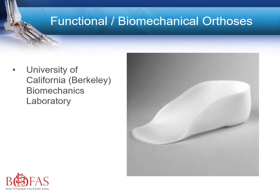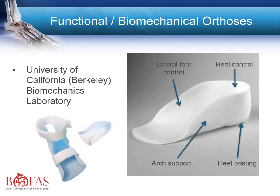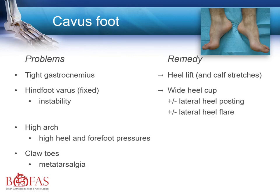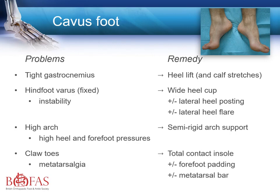Even further support can be achieved by adding a brace to extend this into working as an AFO. Another common and difficult situation is the cavus foot, in which there may be a tight gastrocnemius, hind foot varus, increased foot pressures due to the high arch, and often clawing of the toes. The remedy again involves a heel lift and calf stretches, with a wide heel cup, but this time the lateral heel posting is on the other side. Some support underneath the heightened arch may be needed, and with clawed lesser toes, the toe box will need to be increased in size.